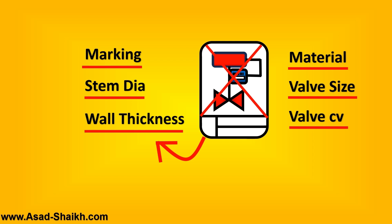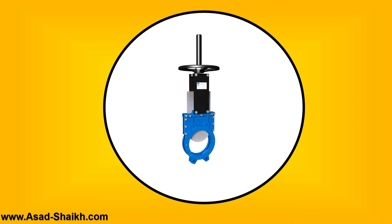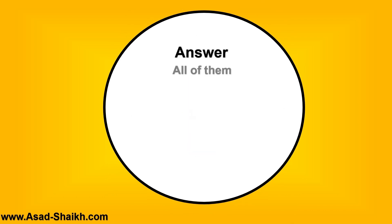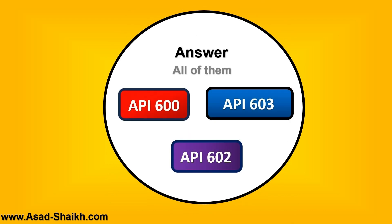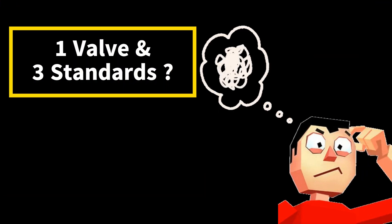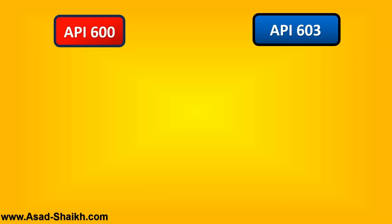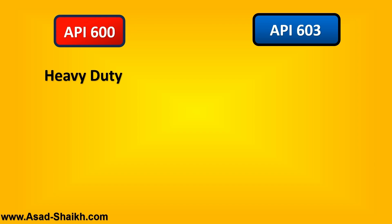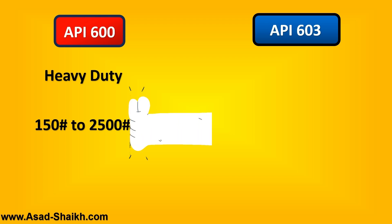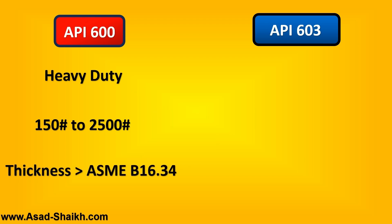A standard helps align all the vendors together so we don't miss any important detail. Now, the answer to the question: for gate valves, all three — API 600, API 602, and API 603 — are applicable standards. But isn't it confusing that one type of valve has three standards? Let's compare API 600 with API 603.